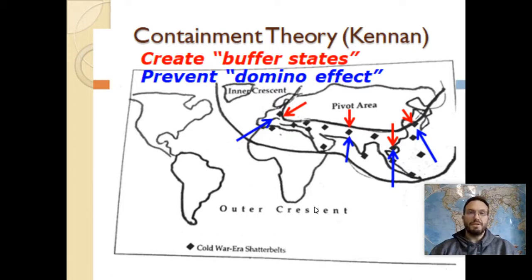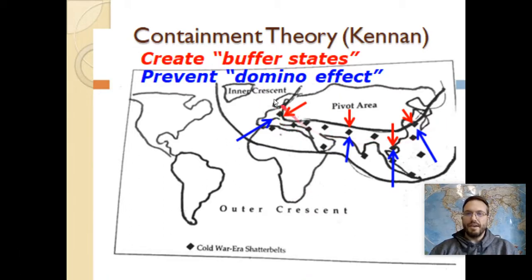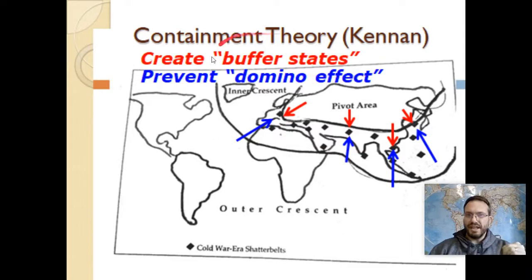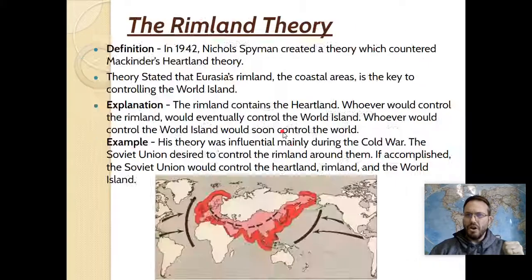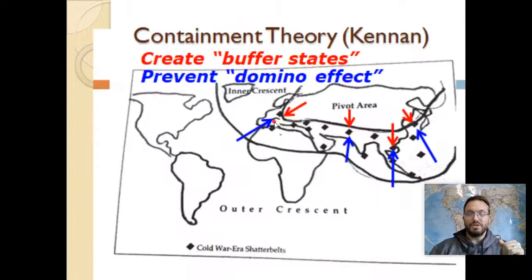Containment theory is pretty simple — it's entirely the United States' guiding strategy in the Cold War: to contain the spread of communism. The idea is that the US will not let communism spread outside of the USSR; they will contain it by making sure no state in the rimland becomes communist. There's this whole idea from both sides of creating buffer states to protect each other from the other side, since much of the rimland is somewhat non-aligned.